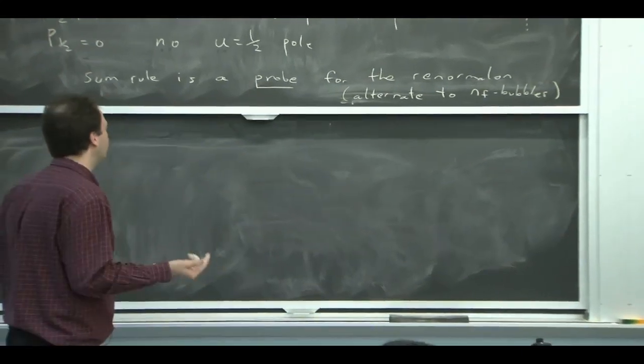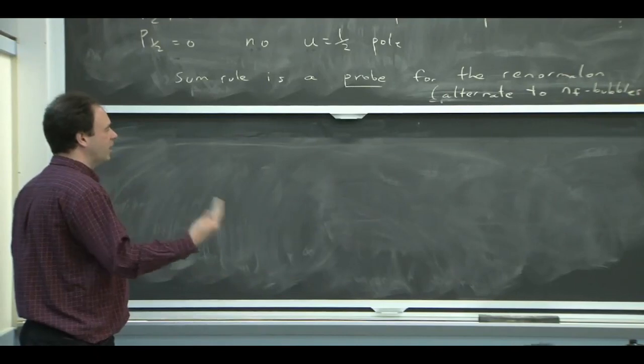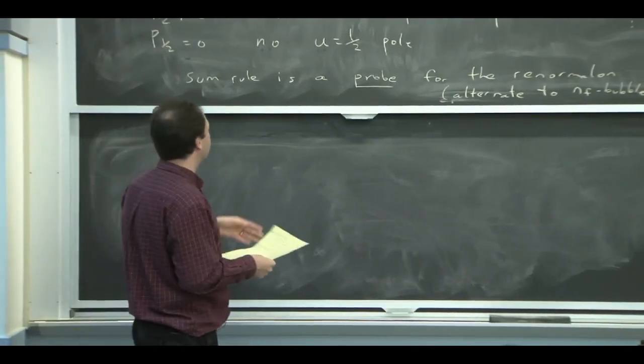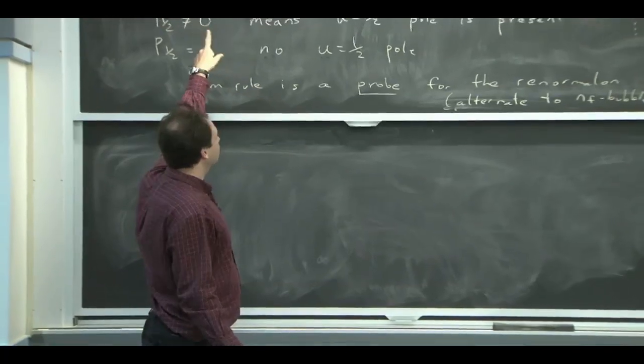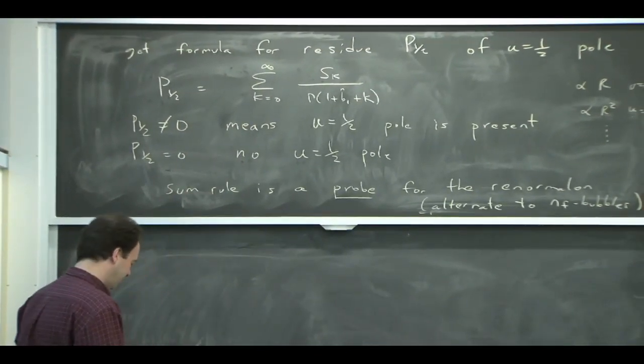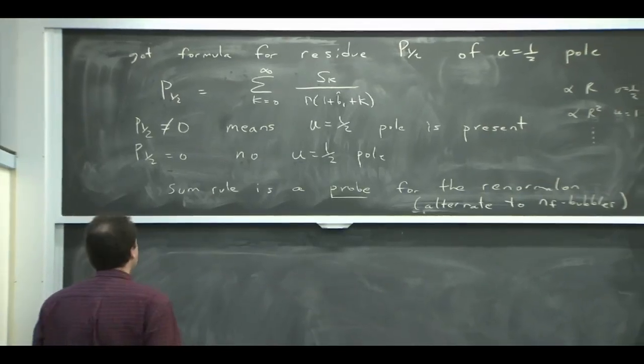So the NF bubbles are good for finding out whether or not this thing has a renormalon. If you get some non-zero result, then you expect that it does. This way, you could actually calculate the residue if you wanted to know that value for some reason. OK.